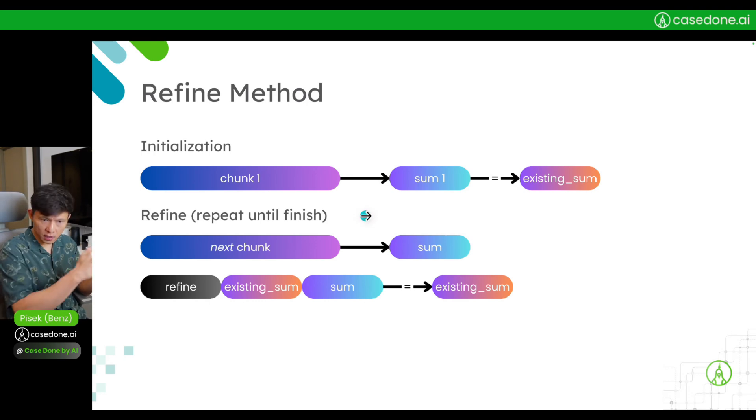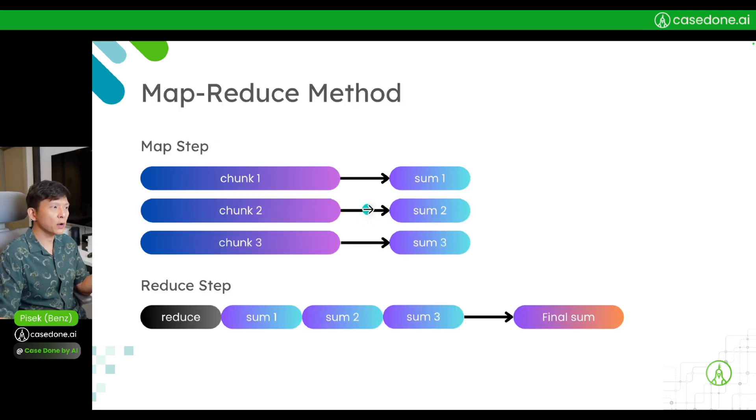While if you go back to take a look at map-reduce, this process can be done in parallel. So typically, if you have code that can parallelize the processes, this map-reduce method is going to be faster because it can map in parallel. However...